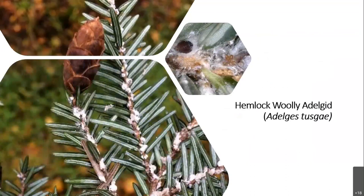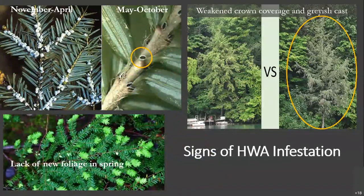Hemlock woolly adelgid, or HWA for short, is an aphid-like insect native to southern Japan. It measures only several millimeters in size but has a big impact on our forests. HWA feeds on the xylem — the nutrient storage of hemlock trees. Over time, infested trees weaken and eventually die, between 4 to 20 years depending on HWA population density and environmental factors. It takes only one female to introduce an infestation, and each female can lay between 50 and 100 eggs, producing two generations a year.